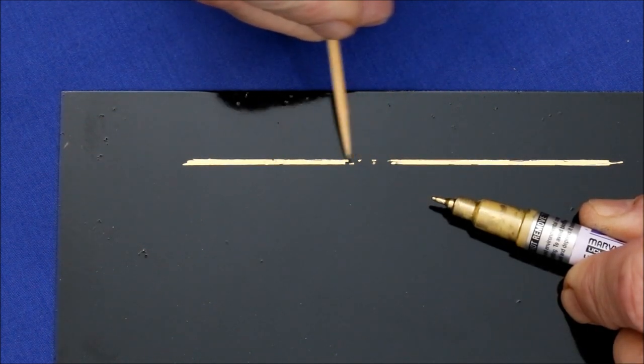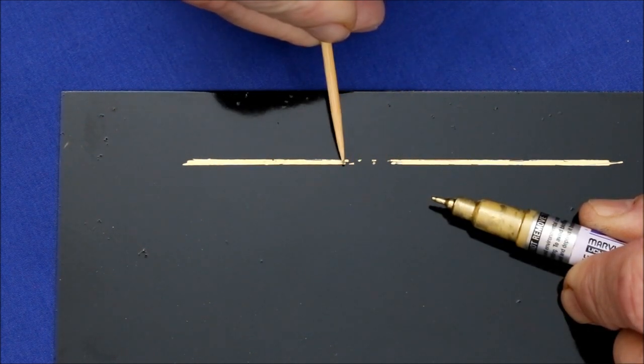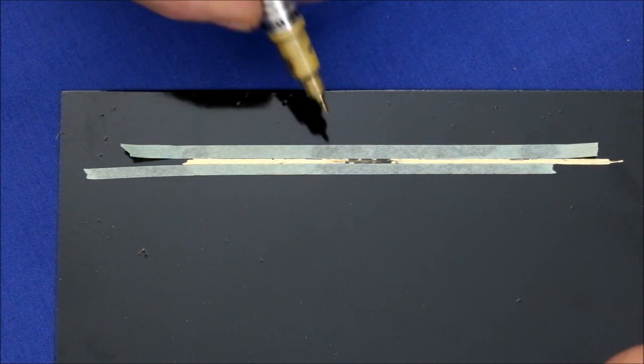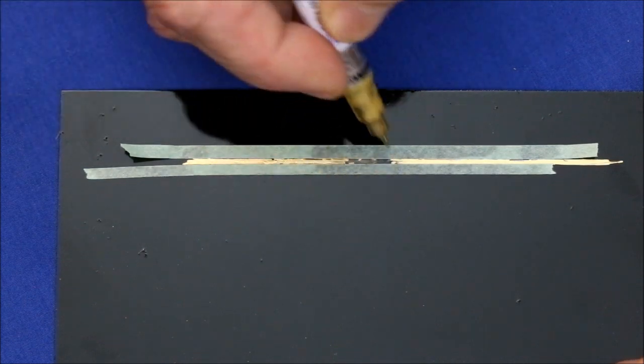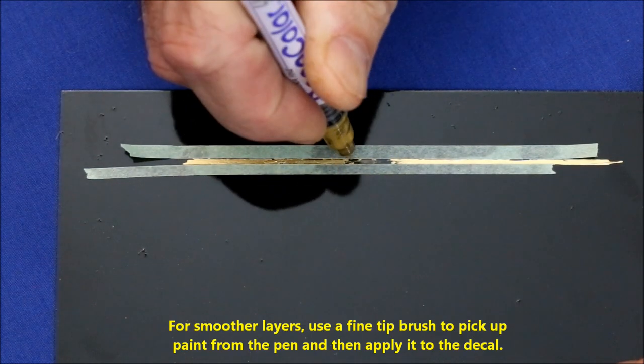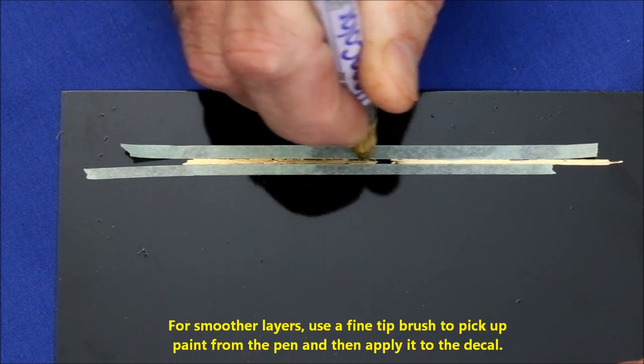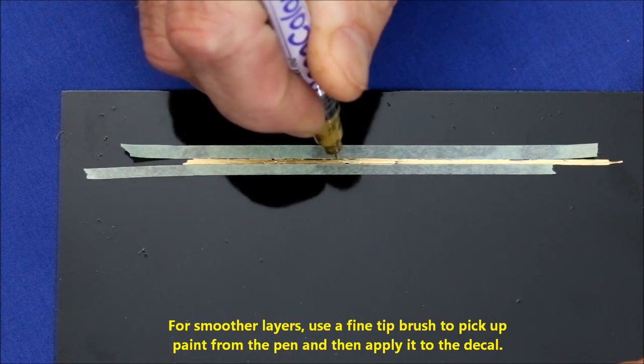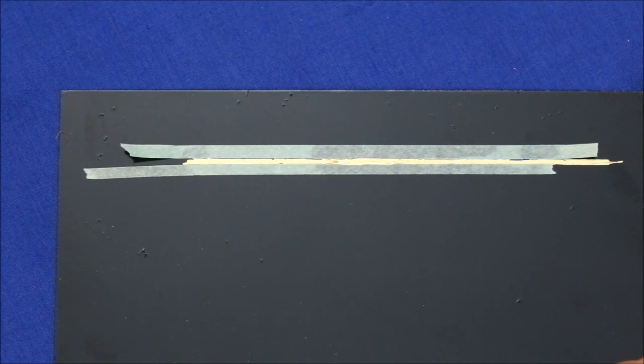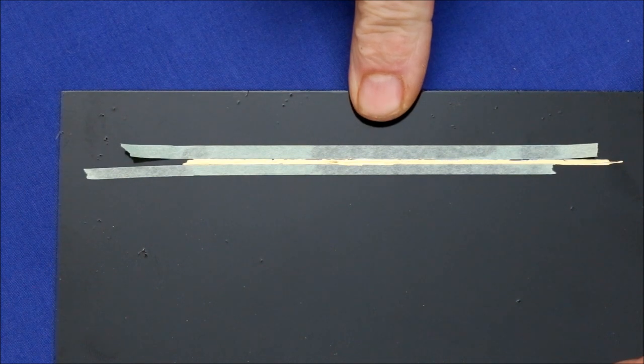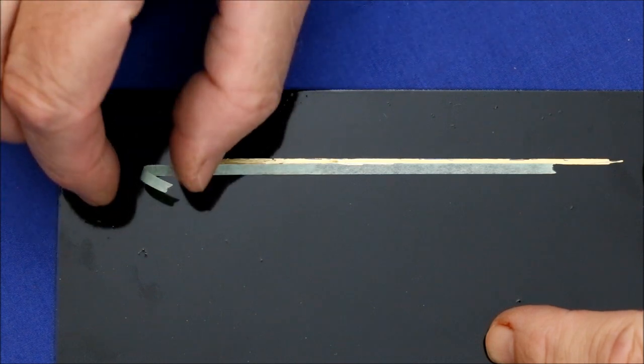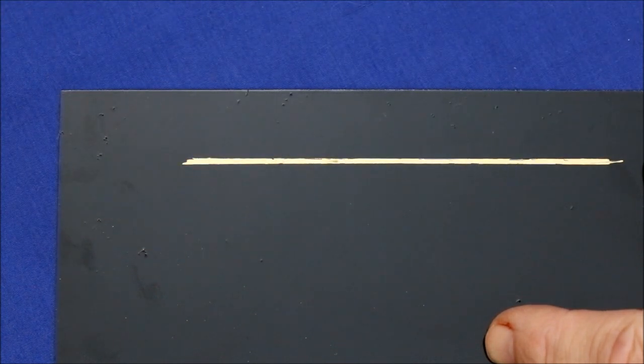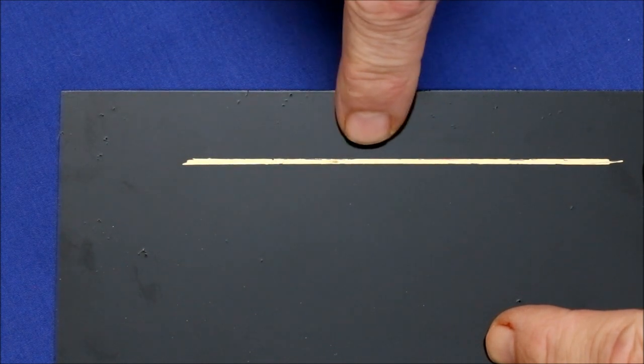For larger sections on lines where you want nice straight edges, border the line or the detail to be touched up with good quality masking tape. Then fill it in. Once it's dry, remove the masking tape to reveal a nice clean edge.